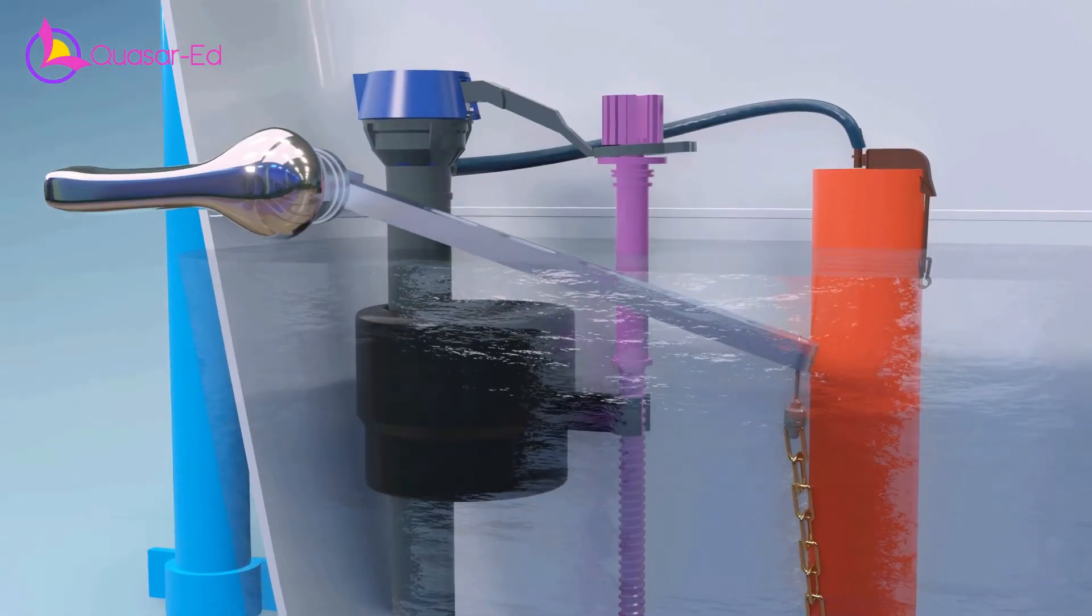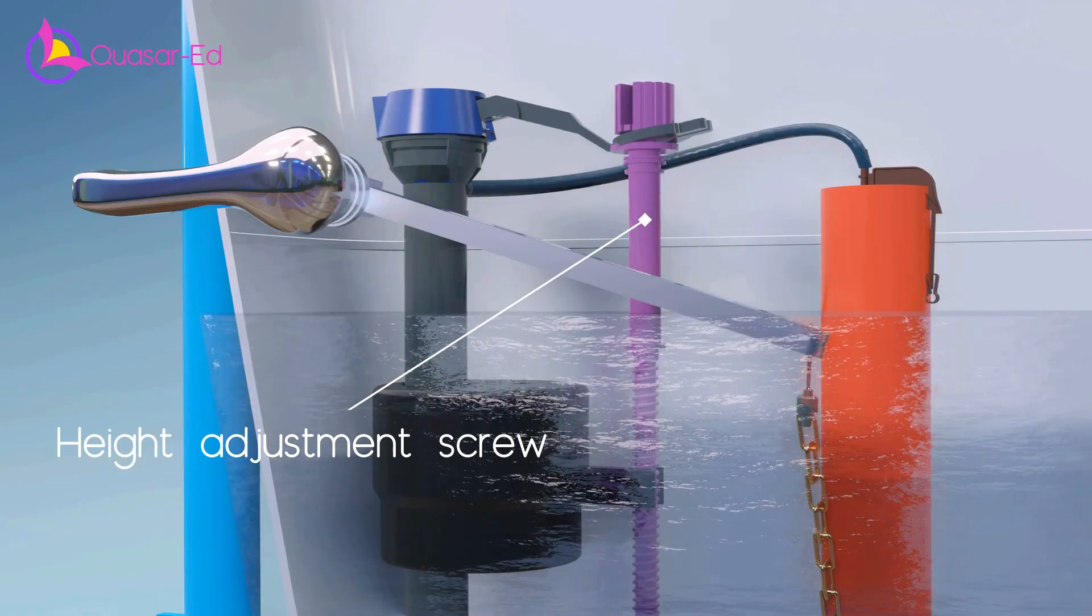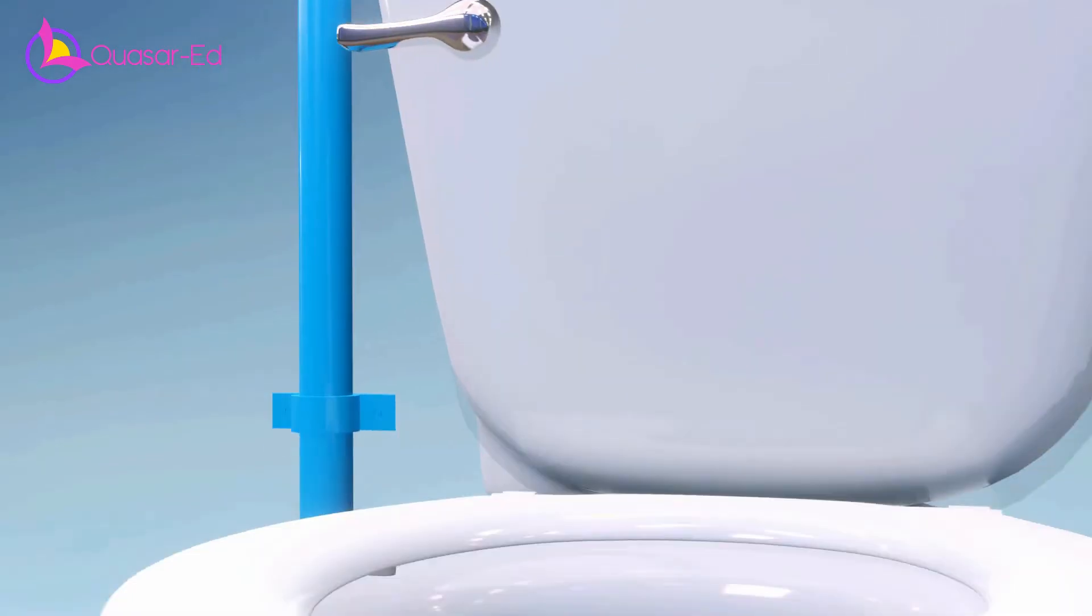Also, we must set the tank refill level lower than the overflow tube so that no water is wasted unnecessarily. We can set that water tank level by adjusting the float screw up or down.